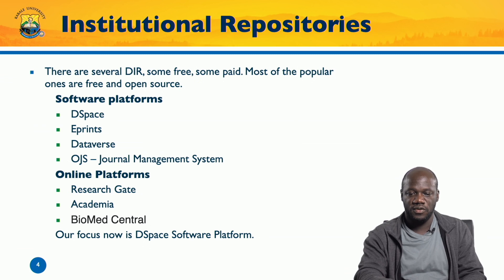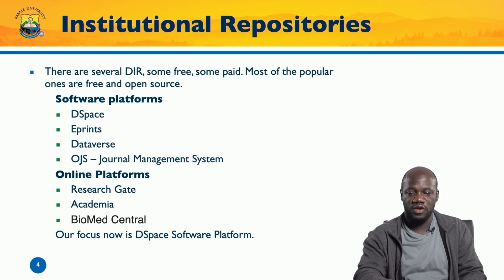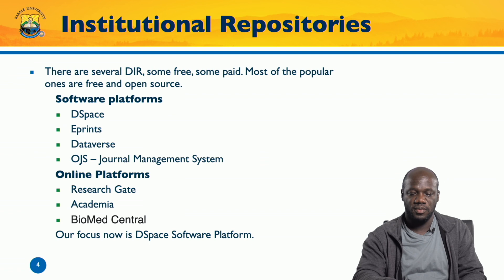We have several digital institutional repositories — some are free, some are paid for. Most of the popular ones are free and open source. For instance, DSpace, Eprints, Dataverse, and OJS are software platforms which are all free and open source. We also have online platforms like ResearchGate, Academia, Biomed Central, and more.